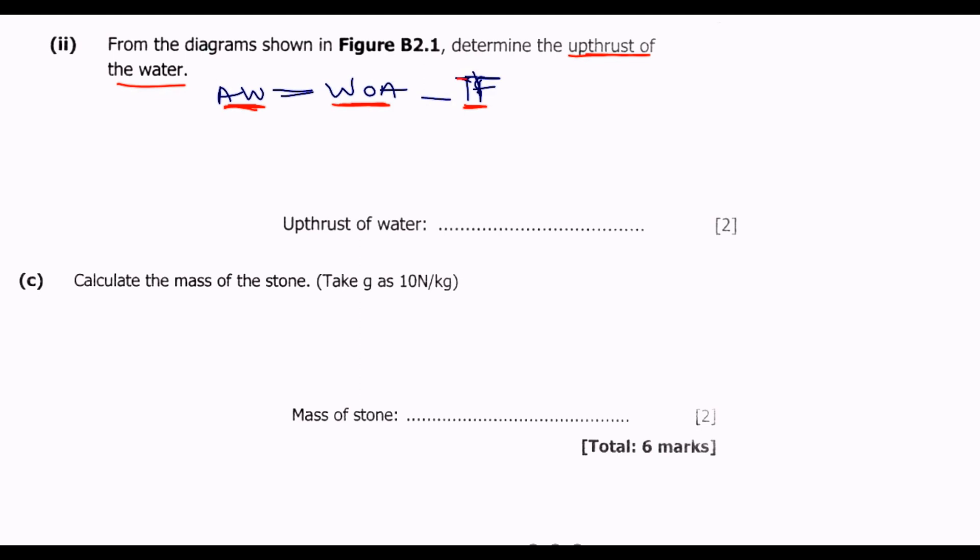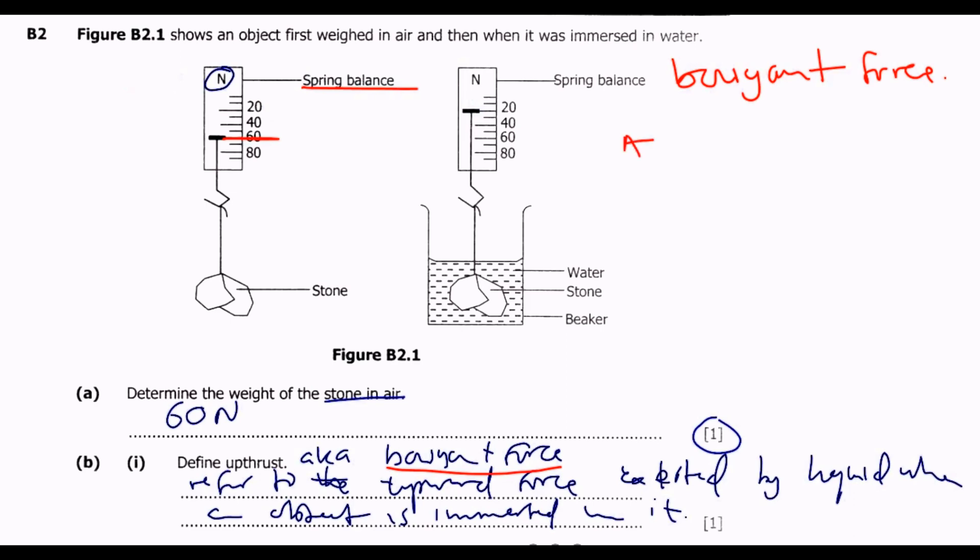We have weight of the object in air minus the thrust force or the upthrust force, the one we just defined. Then this is the apparent weight when it is in the water, so this is this reading which is 20, so you put 20 here. Then equals, what's the weight of the object in the air, which is in this case 60 we just did there, so 60, then minus what we are looking for which is the upthrust force.